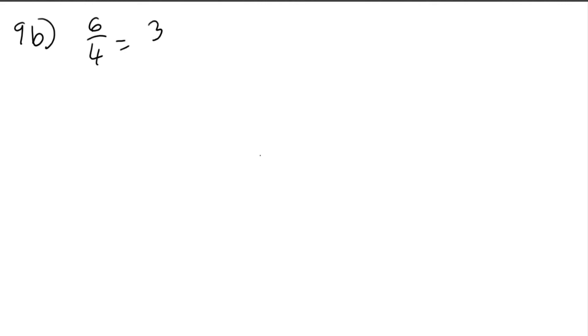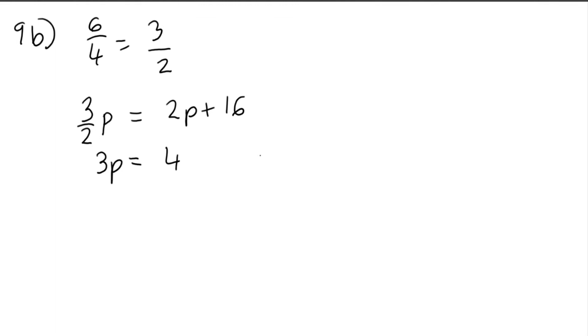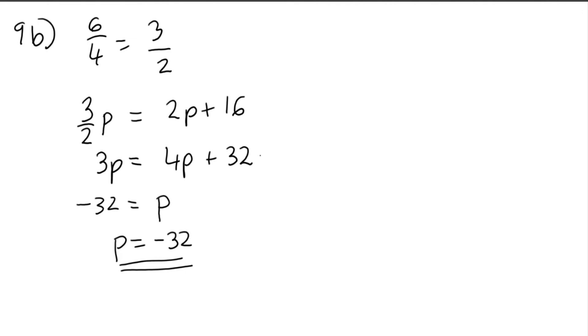Part 9b: determine the value of p for which u and v are parallel. If they're parallel, they must be multiples of each other. Looking at the last components, 4 and 6, the ratio is 6 over 4 which is 3 over 2. So 3 over 2 times p must equal 2p plus 16. Multiplying up: 3p equals 4p plus 32. Moving terms: p equals negative 32. That's the value of p for which u and v are parallel.